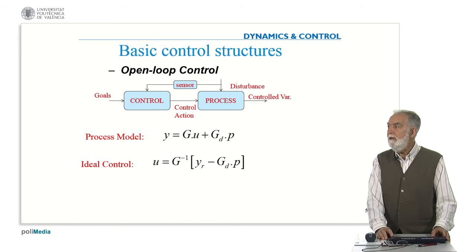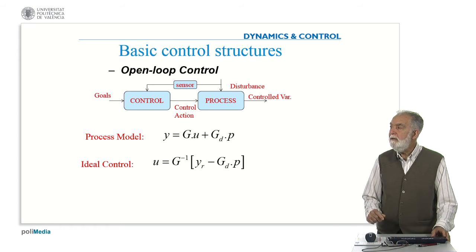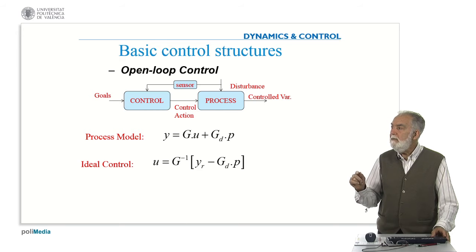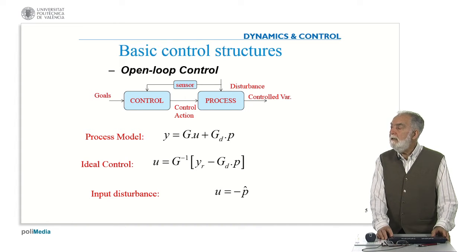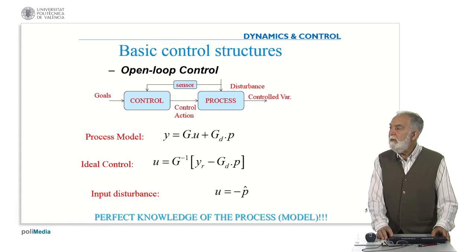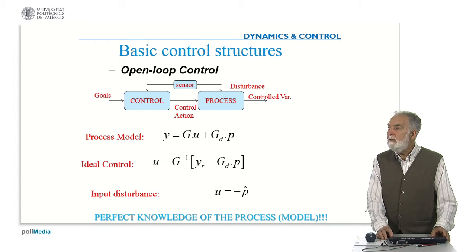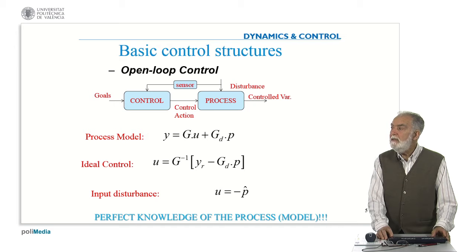The ideal control, as you can derive from this expression, is that u, the control action, will be the inverse of g times the reference minus the effect of the disturbance. So in the case that the disturbance is at the input, we can apply a control action which is opposite to the disturbance. That means we need a perfect knowledge of the process and its model, because if we want to apply the ideal control, the control is generated based on g, which is the model of the process, and gd, which is the model of the disturbances.